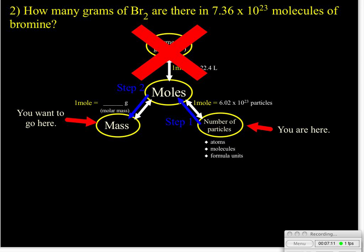So in this case, we won't worry about the 22.4 liters per mole. But we will be using 6.02 times 10 to the 23rd and we are going to have to calculate a molar mass for the bromine, for the Br2.